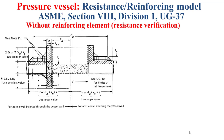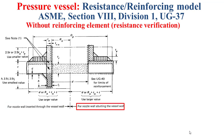The resistance and reinforcing model is depicted by the figure you see now in this slide. On the left, we have the case where the nozzle is inserted through the vessel wall. The vessel wall here is the shell or the formed head. And on the right, we have the case where the nozzle is abutting the vessel wall. This model involves the vessel wall highlighted here in red, which can be a shell or a formed head.